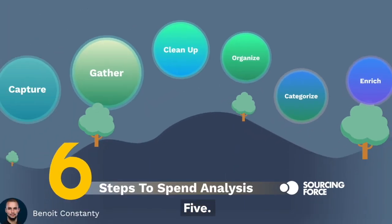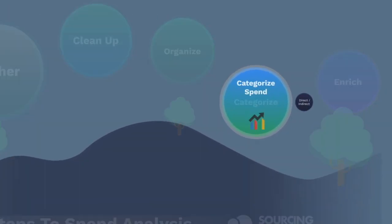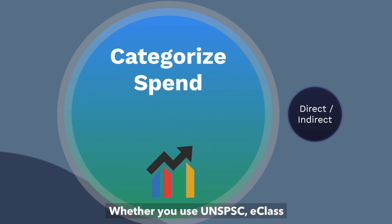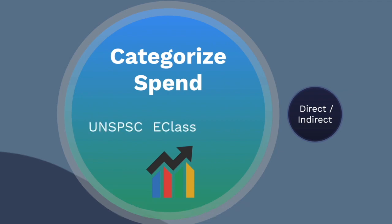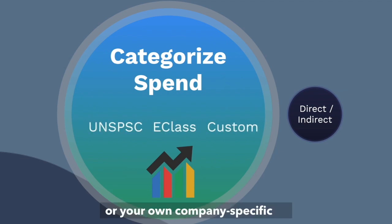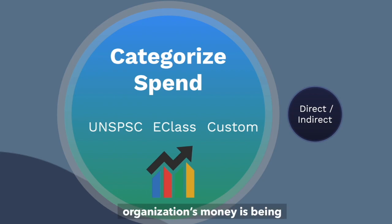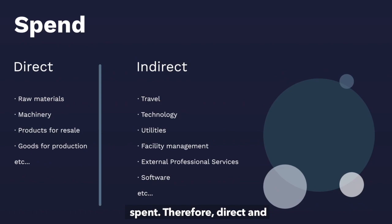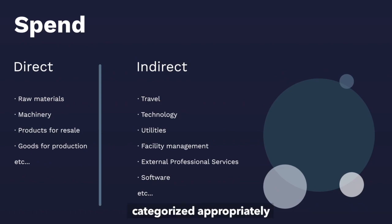Step 5: whether you use UNSPSC, E-Class, or your own company-specific categories, you want to identify the areas where your organization's money is being spent. Therefore, direct and indirect spend should all be categorized appropriately.